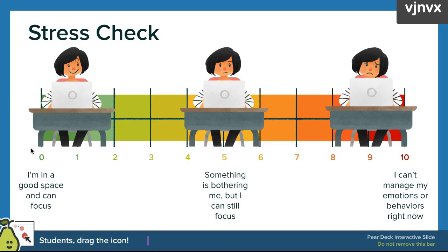This next slide is a draggable slide — it's a stress check template. This is good for asking students to check in with themselves and do a little self-assessment on how they are feeling. They can drag the purple bar on the scale to indicate their current stress level. Just like with all other Pear Deck templates, you are able to edit it and change the descriptions and even the images.